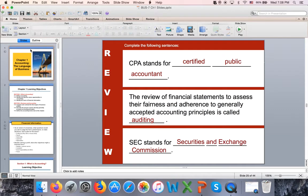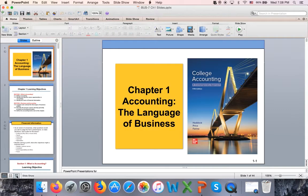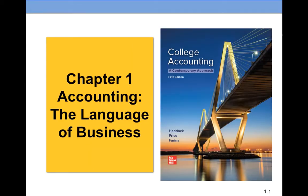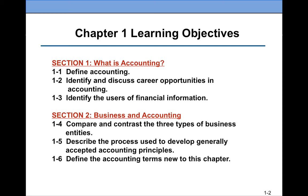This is going to be the second part of the Chapter 1 video for Business 7, Accounting for Small Business. In the first video I covered the first section — we defined accounting, talked about career opportunities, and identified the users of financial information. In this video I will cover section 2: I will list, compare, and contrast the three types of business entities, and we will describe the process used to develop GAAP.